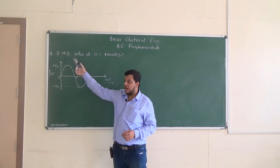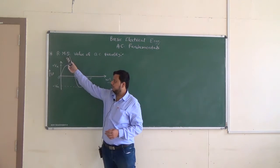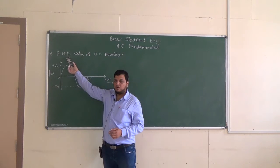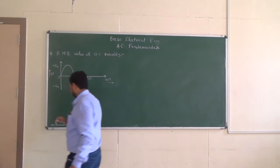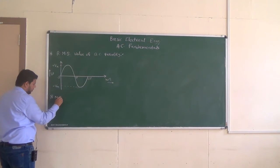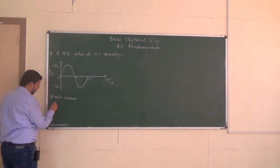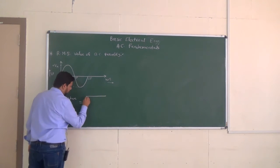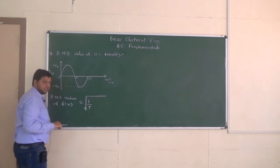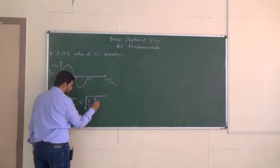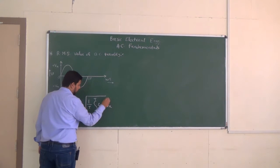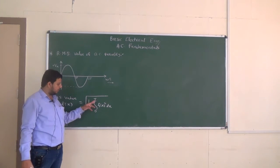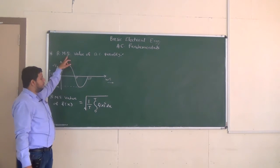Now what is the meaning of RMS? RMS is the short form of root mean square — meaning we have to take the root of the mean of the squares of the values. The general expression for RMS value of f(x) is: RMS = square root of (1/T) × integral from 0 to T of f(x)² dx. This represents the square root of the mean, where mean means average.